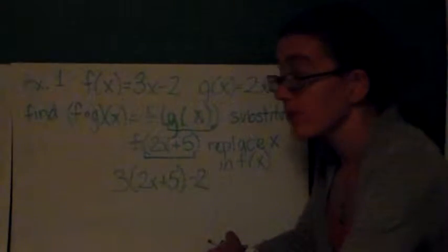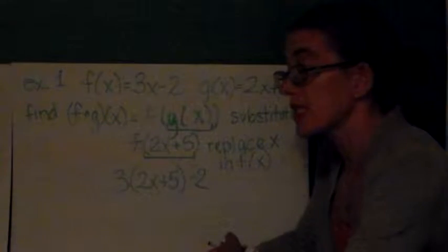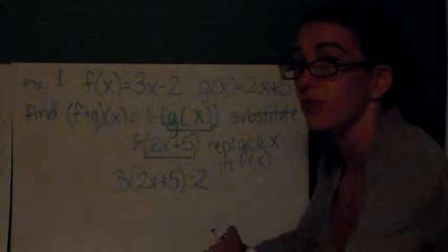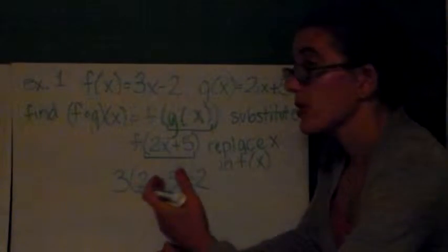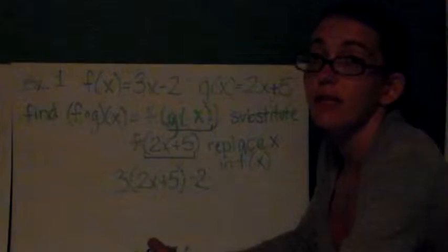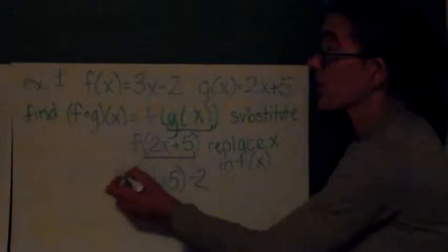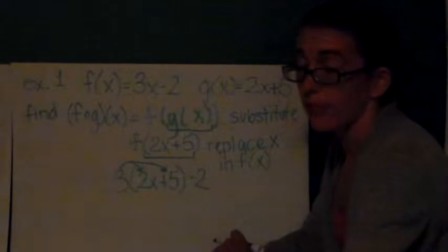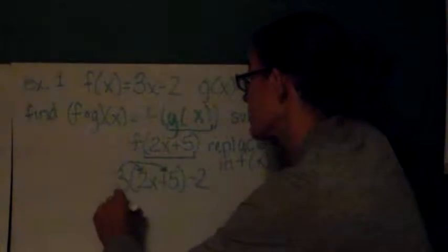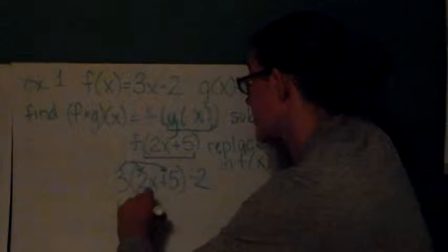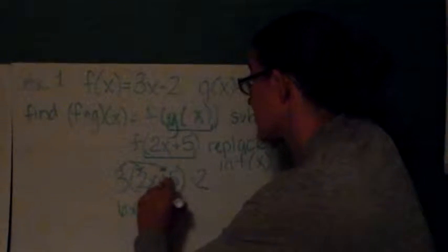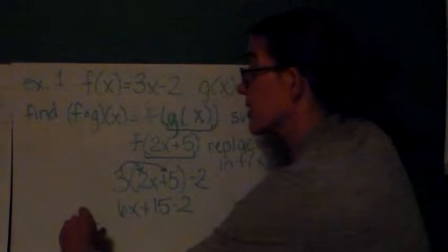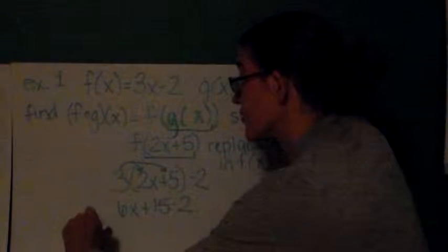So now I have 3 times the quantity (2x + 5), there's that g function, minus 2. One thing that I've seen a lot too much on testing quizzes recently is people forgetting the distributive property. People, the distributive property, you've known it since middle school. Let's remember, everything inside the parentheses gets multiplied by 3. So now I have 6x + 15 minus 2. When I simplify this, I get my new function.